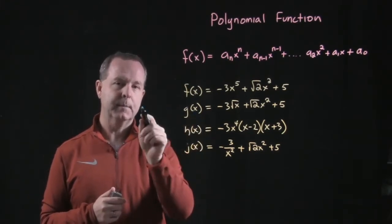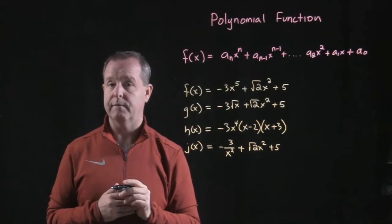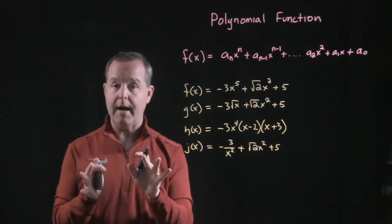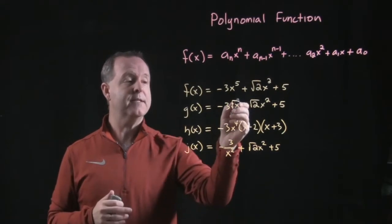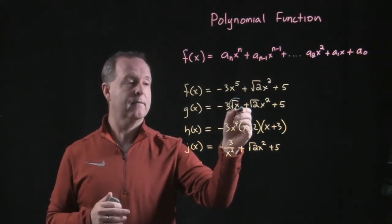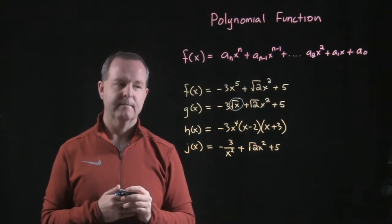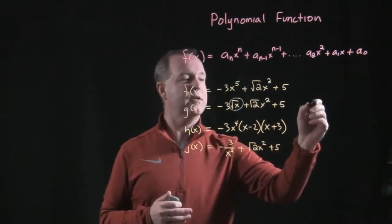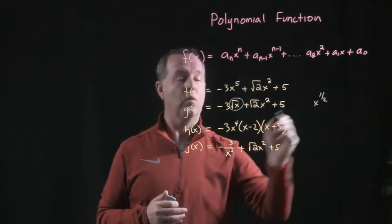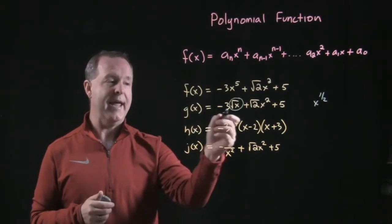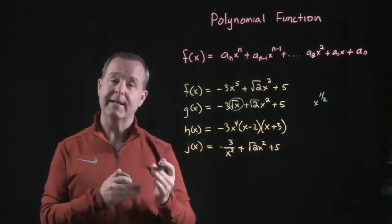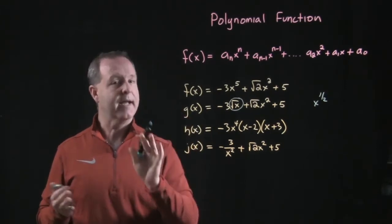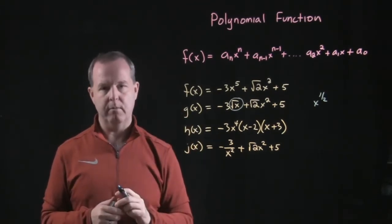g of x is not a polynomial function. And can you determine why? Well, I hope you realize, or you remember that this term right here, what is that? Yeah, that's equals x to the one-half. So, the exponent of this particular x is not a non-negative integer. So, g of x, it's a function, but not a polynomial function.